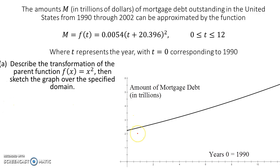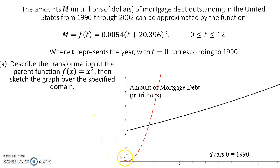Sometimes it might be easier to look at what the original parent function looks like. I went ahead and put in a graph of just plain old f(x) = x², just a plain old parabola. You can see that it's much narrower — the parabola comes down and up like this. This one actually almost looks like a line, it's so wide.